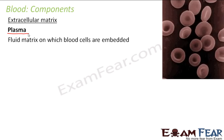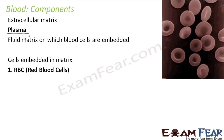The basic structure remains the same: you have one matrix, and in that matrix the cells are embedded. That matrix is made up of fibers and ground substance. Just that in some connective tissues the nature of the matrix will be a little different. In the case of blood, the extracellular matrix is plasma, which is a fluid matrix. The cells embedded in that matrix are the blood cells, and there are many different types of cells embedded in the plasma.